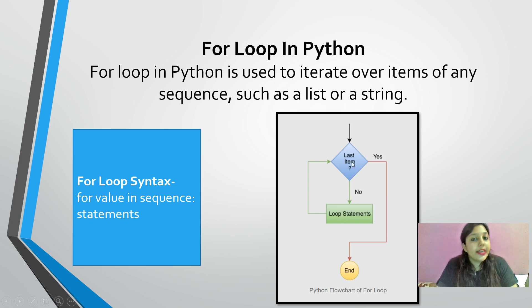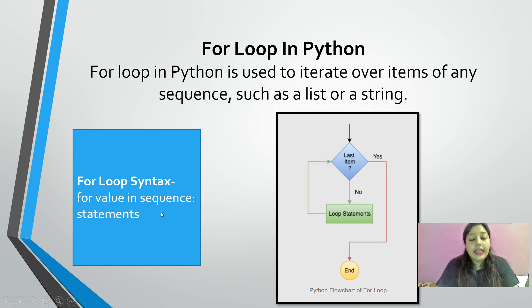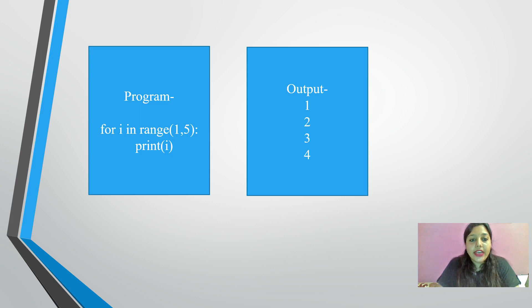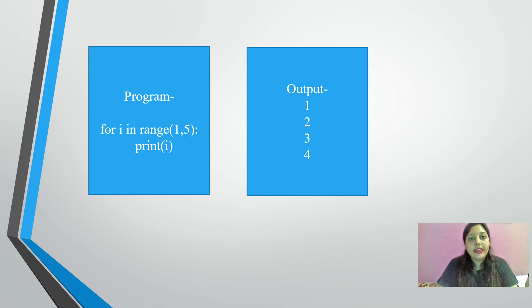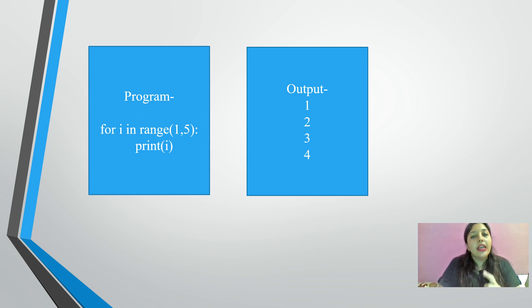Now let us see the syntax for the for loop: 'for variable in sequence: statements'. We use the in operator. For example: for i in range(1, 5): print i. Here 1 is the start and 5 is the stop. One important thing: whatever is the last value of your range is not included in the output. So the output will be 1, 2, 3, 4 — but not 5.